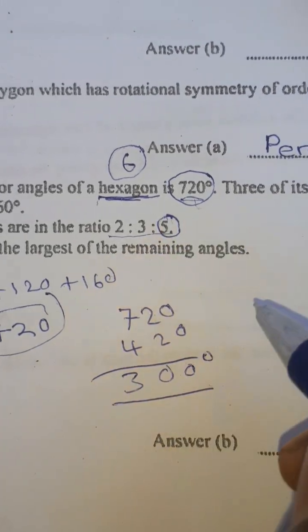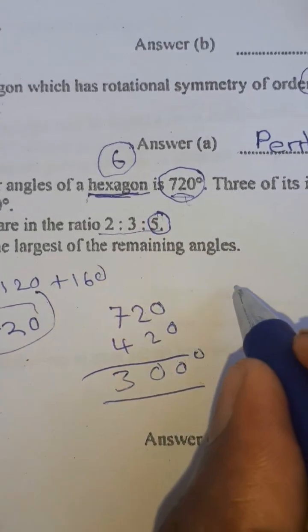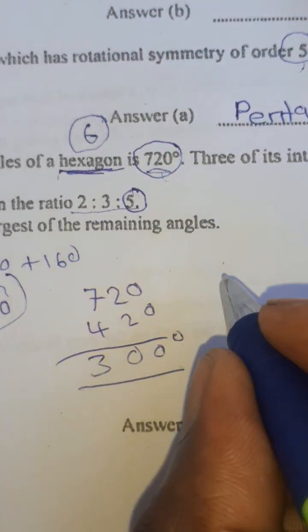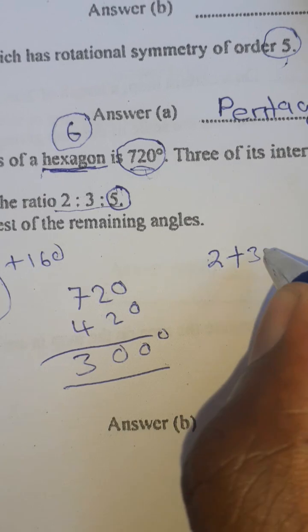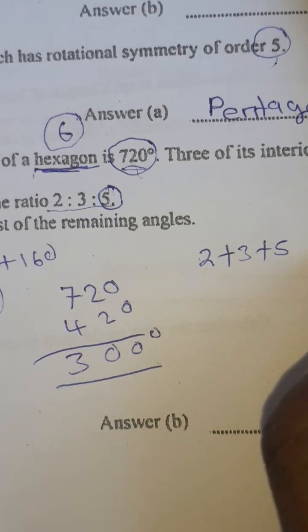The largest remaining angle is 5. We are going to add these ratios to find the total ratio. 2 plus 3 plus 5, you get 10 which is our total ratio.